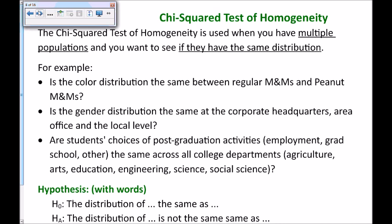Are students' choices of post-graduation activities — employment, grad school, other — the same across all college departments: agriculture, arts, education, and so on? Just like the goodness-of-fit test, the hypothesis will be written in words: the distribution of blank is the same as blank. The alternative: the distribution of blank is not the same as blank. We'll be talking about the same or different distributions for our null and alternative hypothesis.